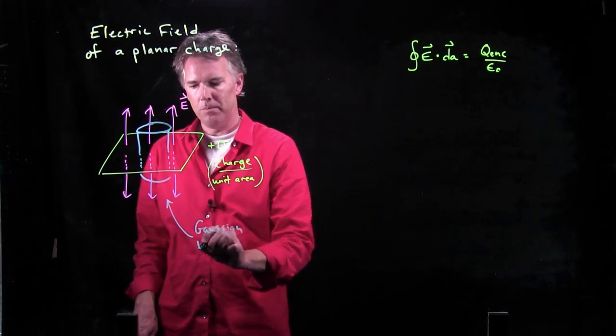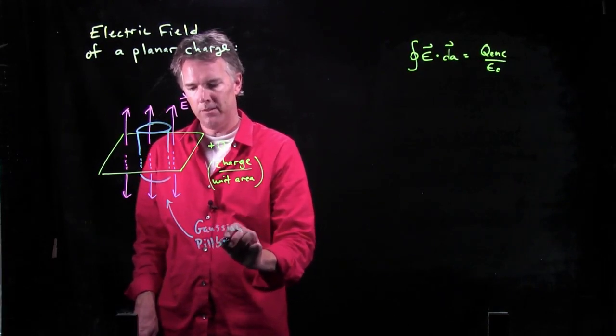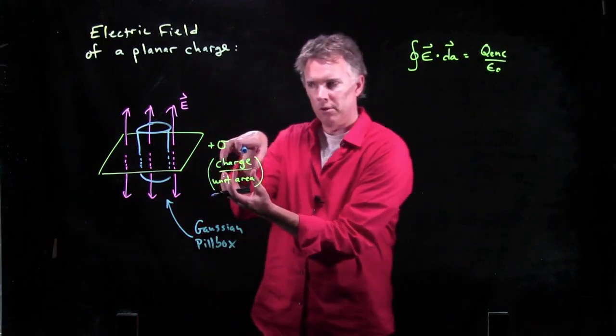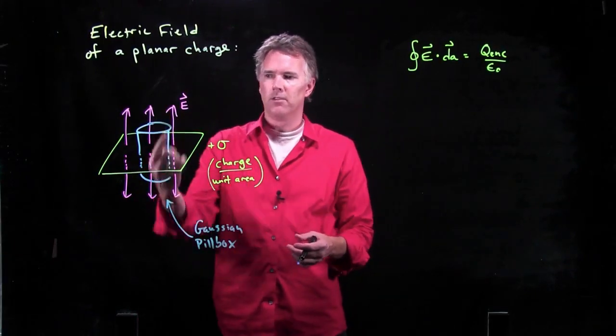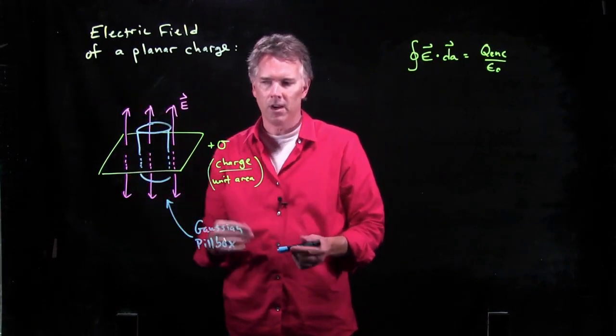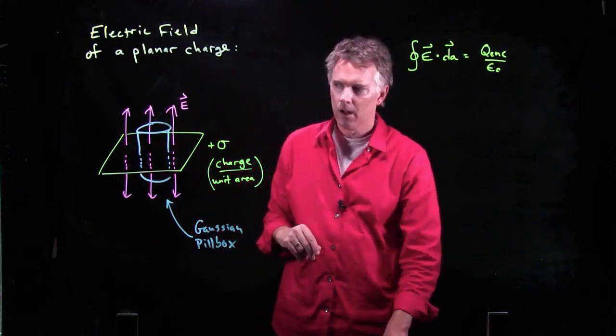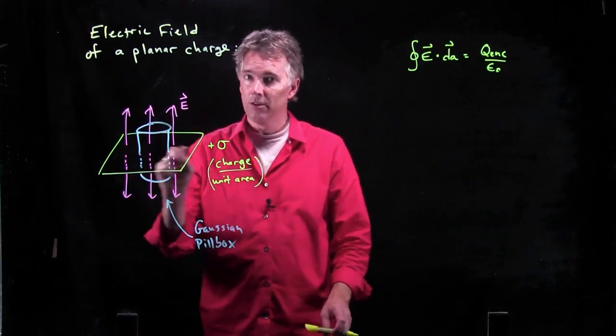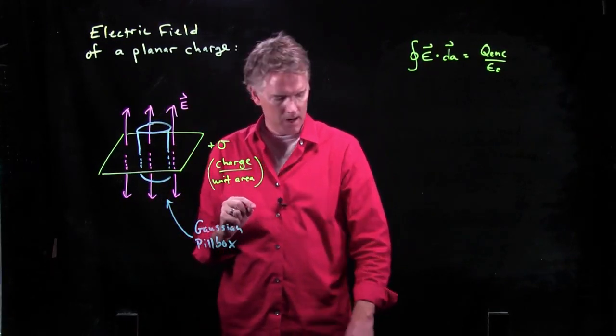That thing is called a Gaussian pillbox. Because it looks a lot like what people used to keep their pills in on their bedside. It's just a little sort of small can that takes advantage of the symmetry of the problem. It doesn't have to be rounded sides. It could be square sides. It doesn't really matter because we're worrying about the planar symmetry in the problem.